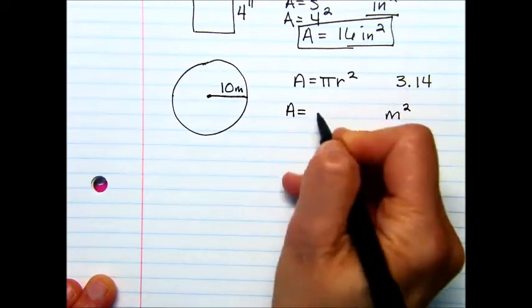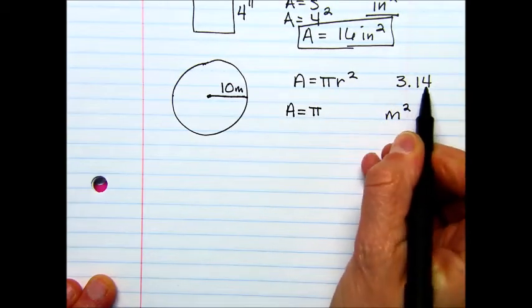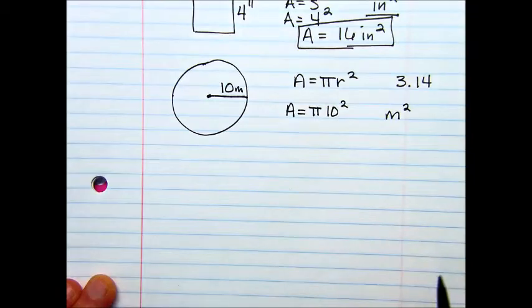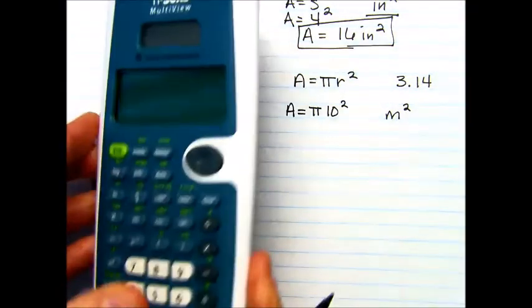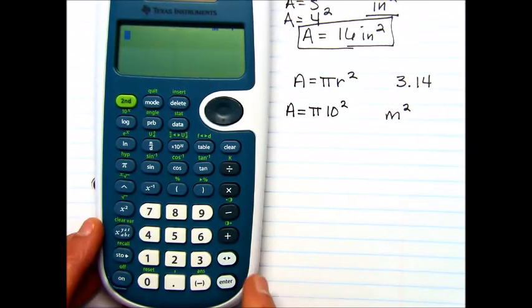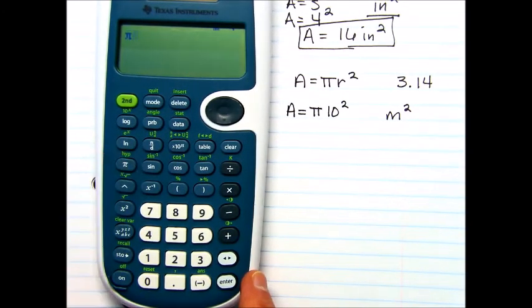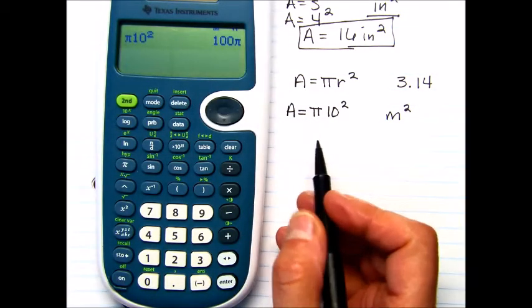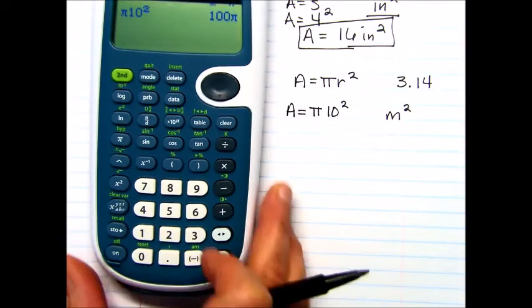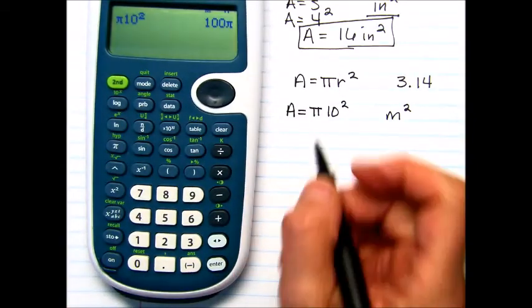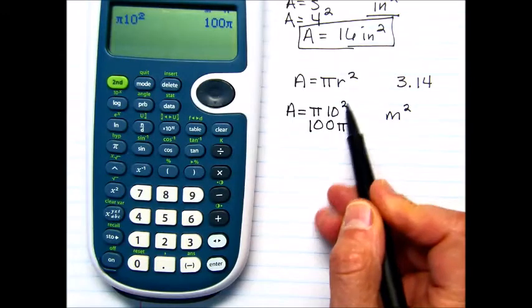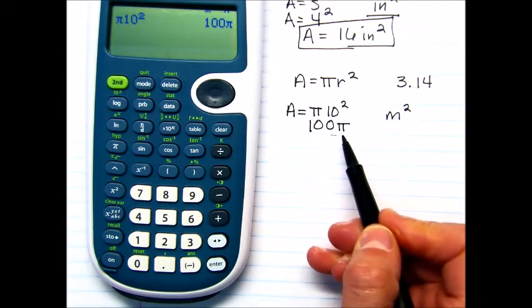And I'll show you the 3.14 way and the pi way with the calculator, times 10 squared. So with the calculator, we would go pi, which is this button here, 10, and then x squared, enter. Now in this case, with this calculator, and other calculators might not do it, but because this is the official GED calculator, and the only one you're going to be able to use, you might get an answer that looks like this, 100 pi. Because that's 10 squared is 100, so it's really just rewriting it for you in the calculator.